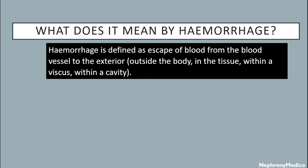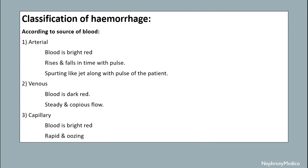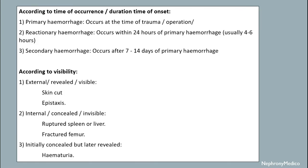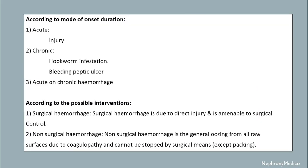Classification of hemorrhage: according to source of blood, it may be arterial, venous, or capillary. According to time of occurrence it may be primary, secondary, and reactionary. According to visibility it may be external, internal, initially concealed but later revealed. According to mode of onset it may be acute or chronic.